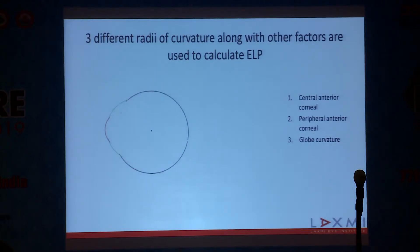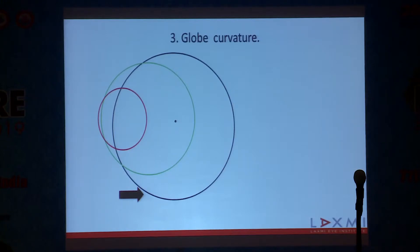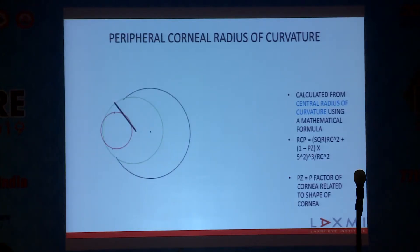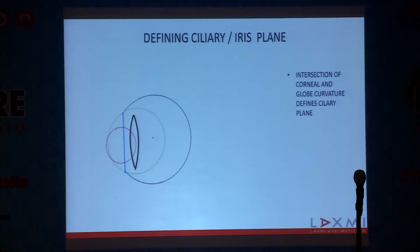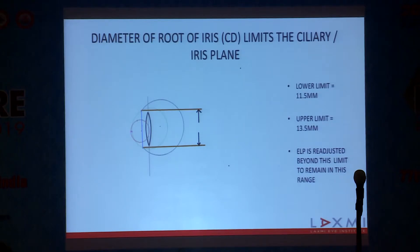Three different radii of curvature are used to calculate ELP: the central anterior corneal curvature, the peripheral anterior corneal curvature, and the globe curvature. The central corneal radius is a direct measurement from the optical biometer. The peripheral corneal curvature is calculated from the central radius using a mathematical formula. The globe radius of curvature is calculated using axial length and preoperative keratometry. The intersection of the corneal and globe curvature defines the ciliary plane, with the iris root diameter constrained between 11.5 and 13.5 millimeters — ELP is readjusted if outside this range.